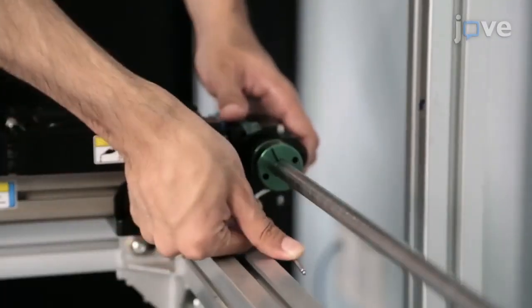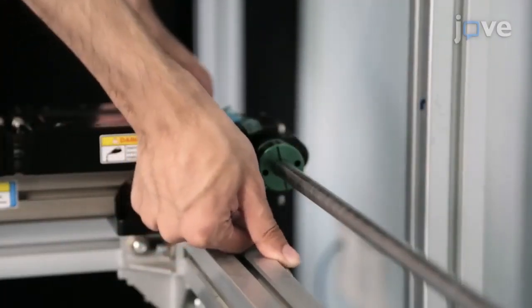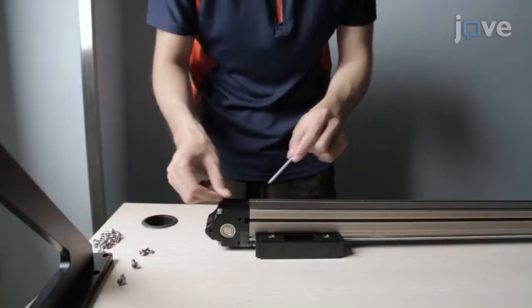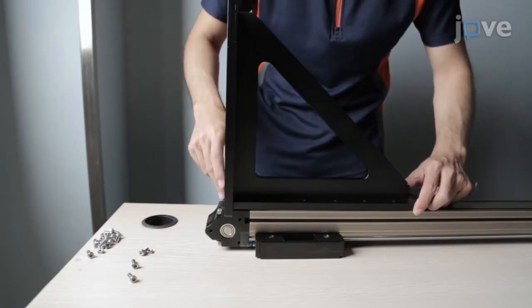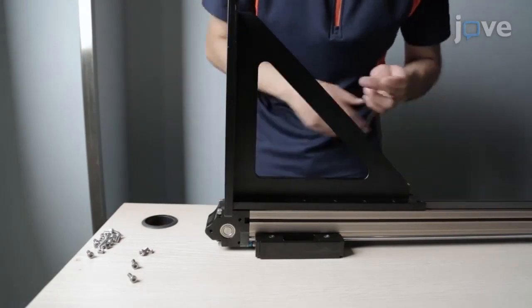Tighten the lock screws of the couplings to synchronize the shafts of the two rails. Put six nuts into the back grooves of the Z-rail and attach one side of the right triangle frame to the back of the Z-rail with screws.